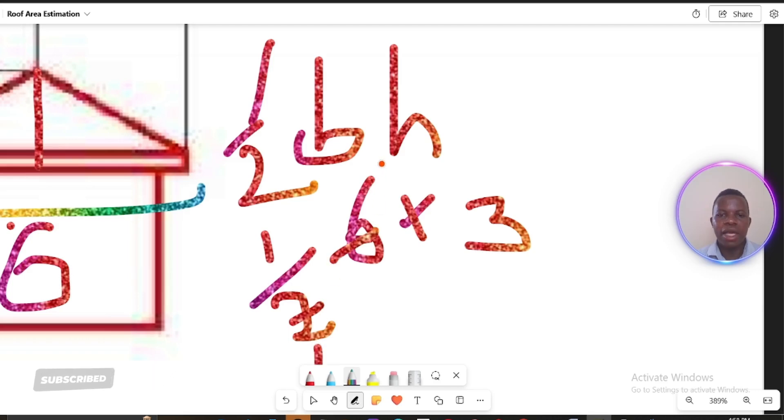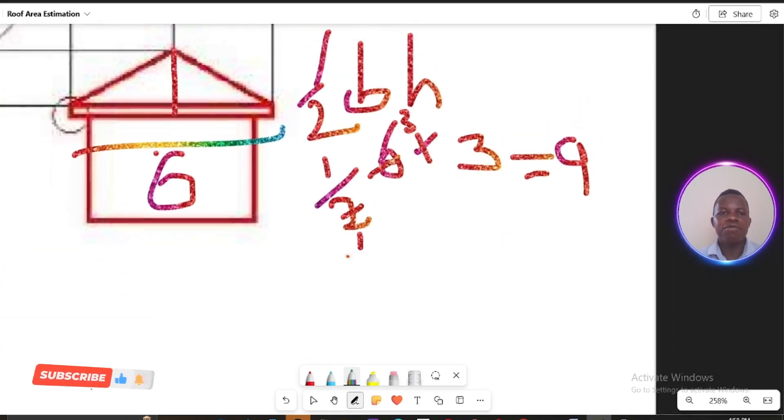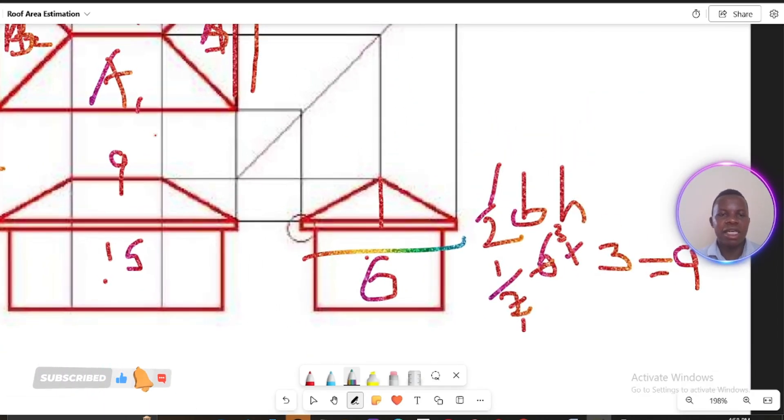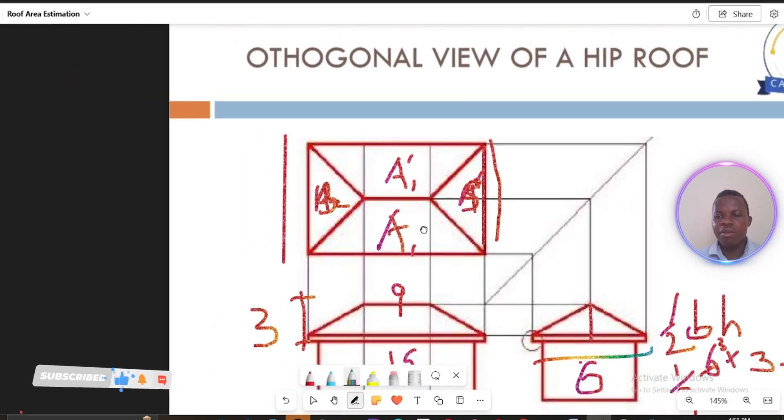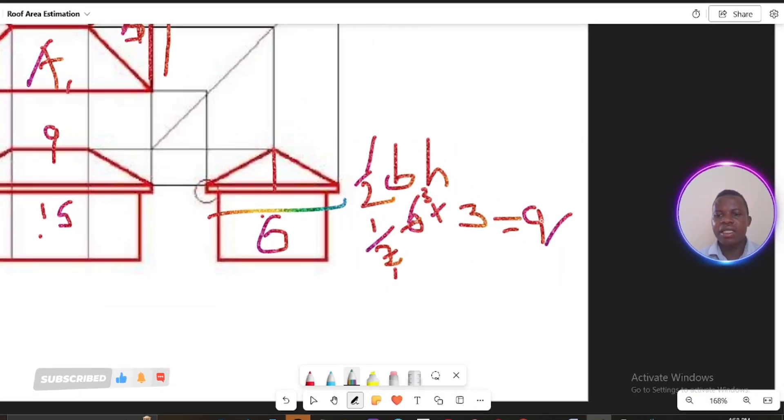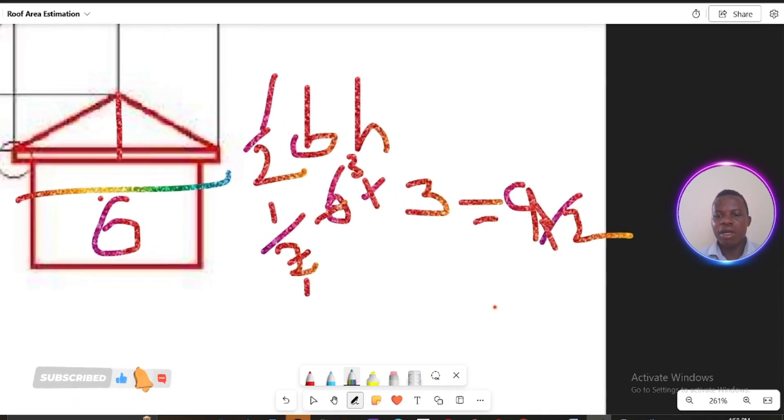So the 2 will go here, leaving 3, and 2 will go there leaving 3. So 3 by 3, which is 9. But remember that you have two sides of these triangles here. This Area B1 and B2. So you have to multiply this 9 by 2. So if you multiply 9 by 2, then you're going to get 18 square meters.